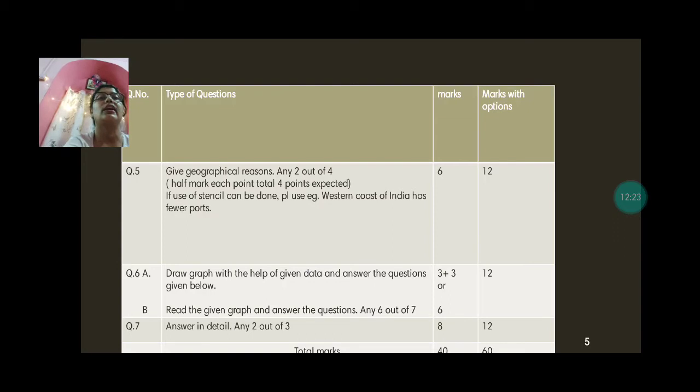Then question 6a is draw a graph with the help of the given data and answer the questions given below. Now this is for 3 marks drawing and 3 marks questions based on this. So 3 marks for drawing and 3 marks for the questions. Now here you need to draw the scale. You need to draw x and y axis with labels. Suppose x axis is years. Y axis say US dollars. Exports, imports in US dollars. So you have to mention exports, imports in US dollars. Then try and take proper scale. I would advise you in tens, hundreds, thousands in that way. So that each line, you know, each millimeter will be easier for you to calculate.